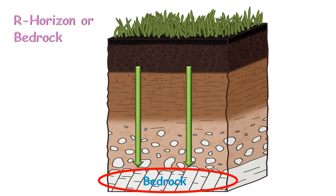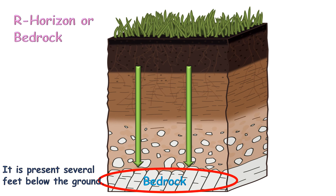R horizon, or bedrock, is the bottom-most layer of soil. It consists of unweathered parent rock and is present several feet below the ground.